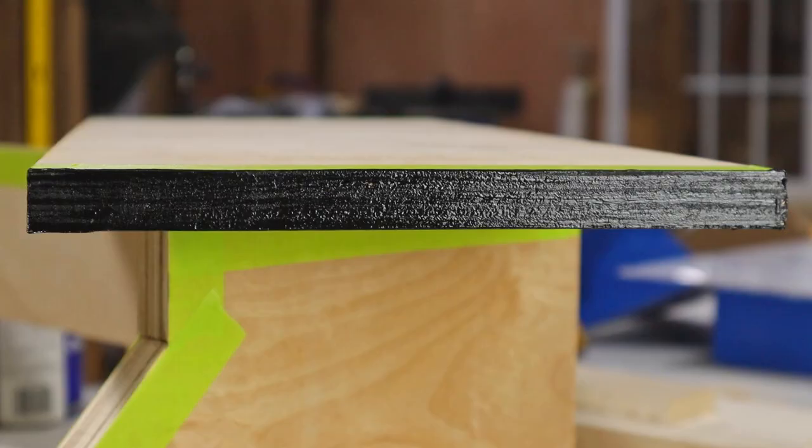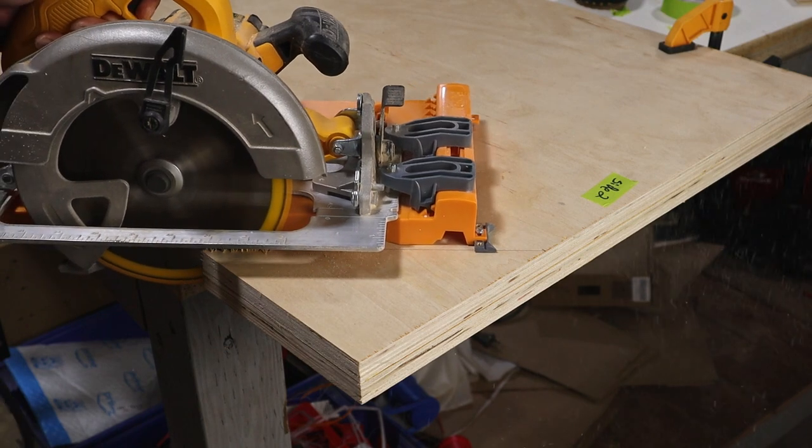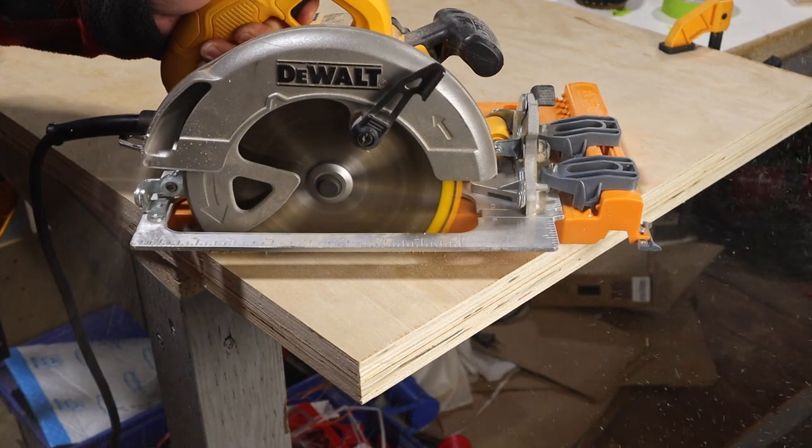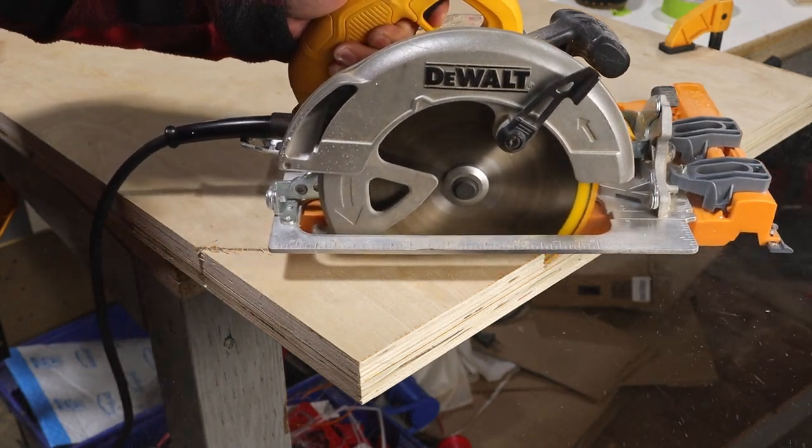While that paint dries I'm going to start on the sides for the main body of the enclosure. These sides are too big to do the angle cut on the band saw so I'm going to use a circular saw and freehand it. Again I have both sides clamped down together to make sure they're both exactly the same.